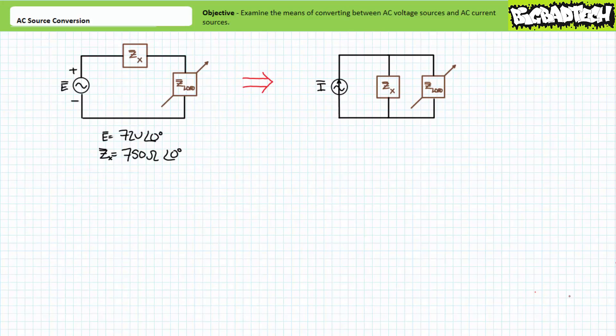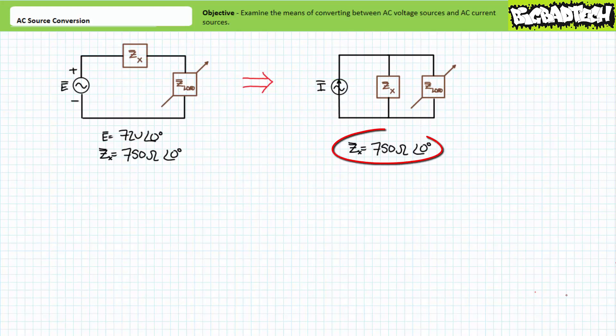We should be able to swap this out for an equivalent AC current source in parallel with the fixed impedance, and the variable load impedance should be none the wiser to the substitution. We need to solve for two properties: one, the phasor equivalent current, and two, the impedance value for the alternate source configuration. The value of the equivalent fixed parallel impedance is the value of the fixed series impedance — only the position changes. For the given circuit, this is an impedance of 750 ohms at an angle of 0 degrees.